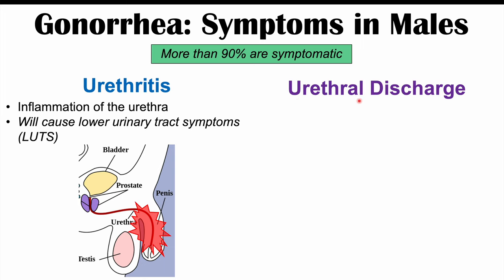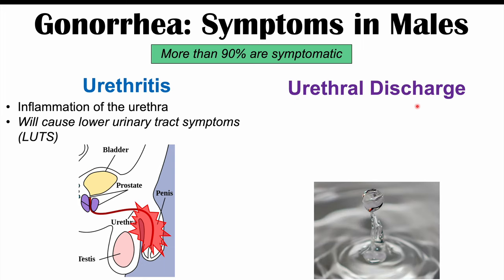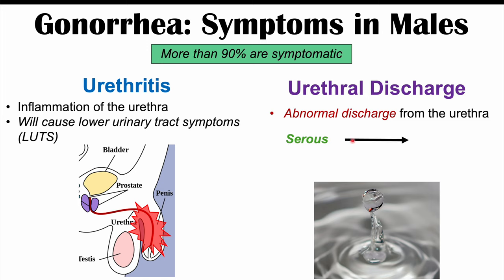Urethral discharge is an important sign of gonorrhea infection in male patients — abnormal discharge from the tip of the penis. It often starts as a serous, watery, thin discharge, and then roughly three days later there's an increase in volume and the discharge becomes purulent, meaning it looks more like pus — more opaque and white in coloration.